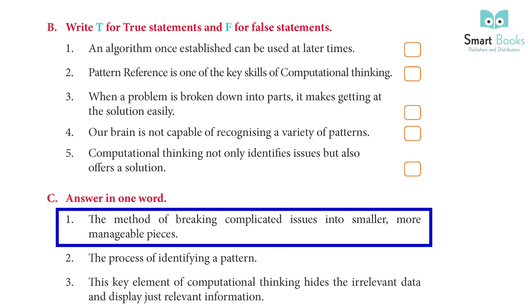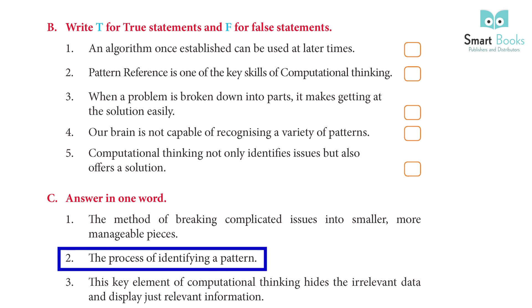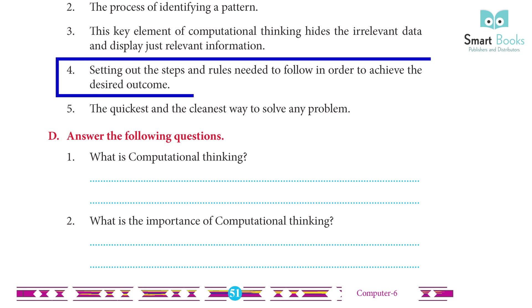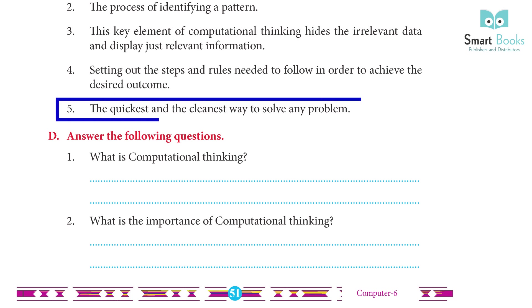C) Answer in one word: 1) The method of breaking a complicated issue into smaller, more manageable pieces — answer: decomposition. 2) The process of identifying a pattern — answer: pattern recognition. 3) This key element of computational thinking hides the irrelevant data and displays relevant information — answer: pattern abstraction. 4) Setting out the steps and rules needed to follow in order to achieve desired outcomes — answer: algorithm design. 5) The quickest and cleanest way to solve any problem — answer: computational thinking.